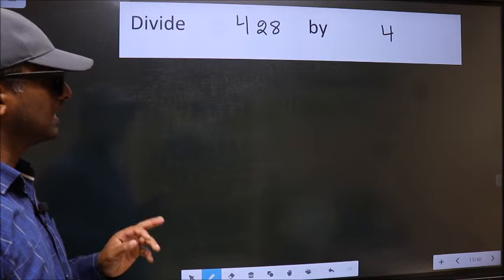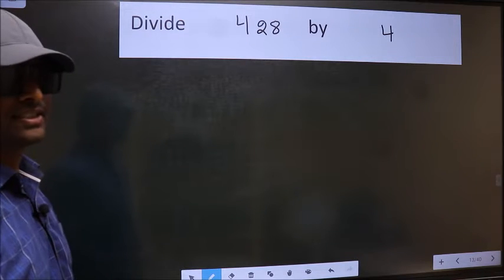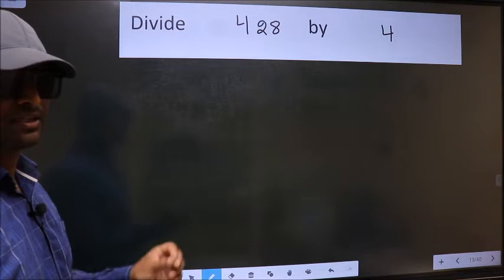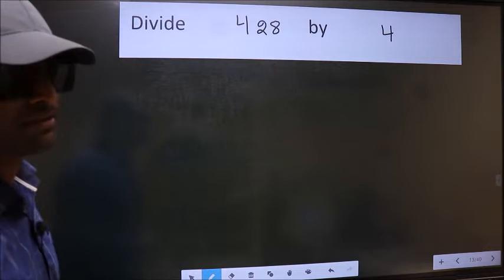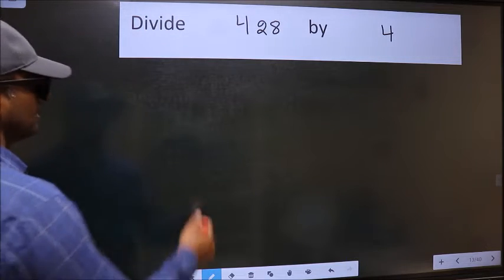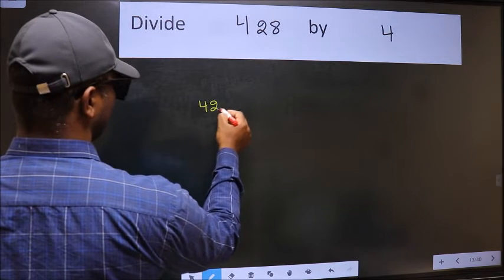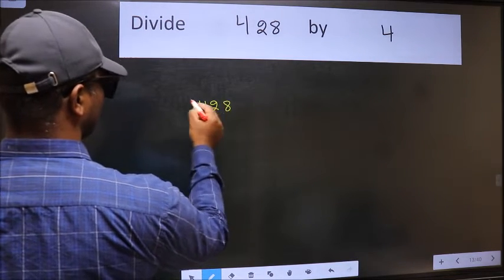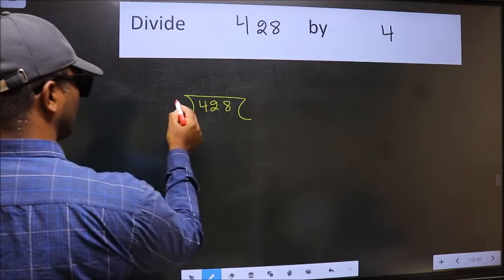Divide 428 by 4. To do this division, we should frame it in this way: 428 and 4 here.